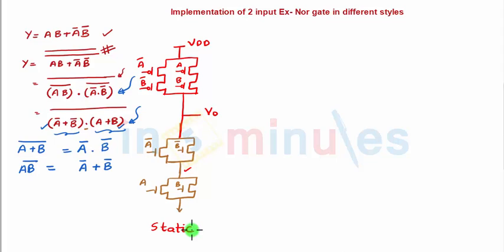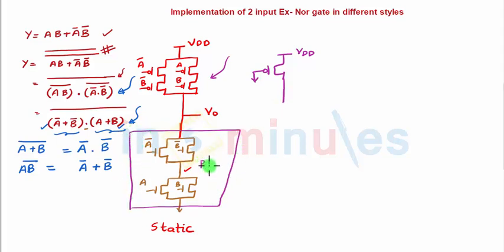If I have to do this using pseudo-NMOS style, what I'm going to do is this entire thing will be replaced by just a PMOS with its input grounded. This is GND. If I put this entire thing into a box and call this as a pulldown for static, this is nothing but pulldown for static and grounded, and my output will be taken between the pullup and the pulldown network. So this is nothing but my two input EXNOR gate in pseudo-NMOS style.